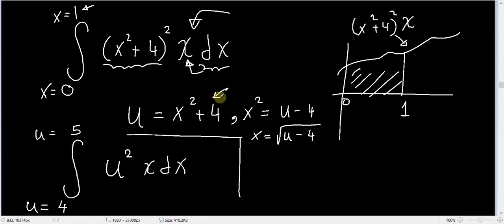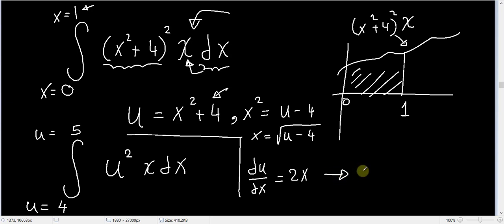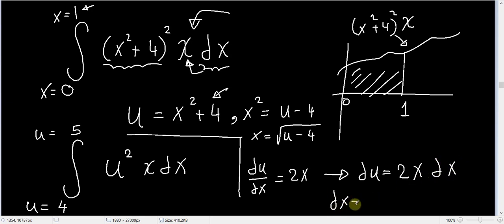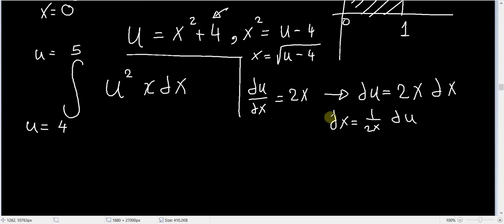From u = x² + 4, we get du/dx = 2x, which means du = 2x dx. This means dx = (1 / 2x) du, and multiplying through, x dx = (1/2) du.